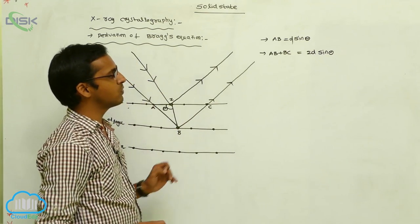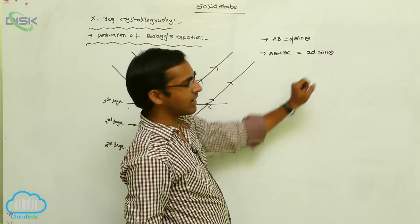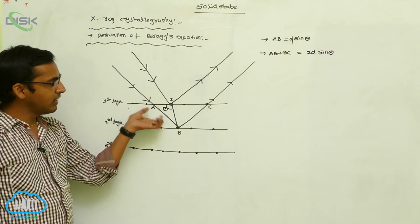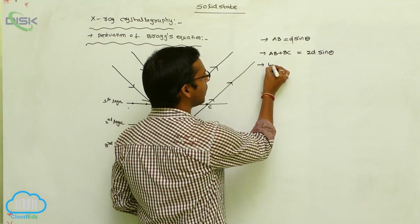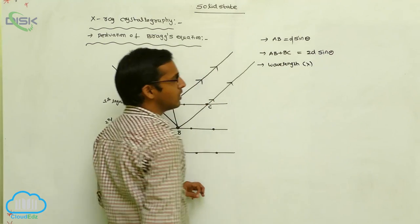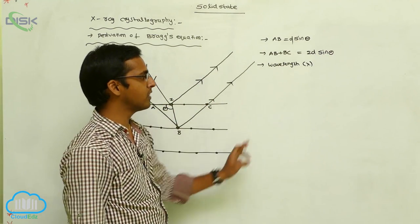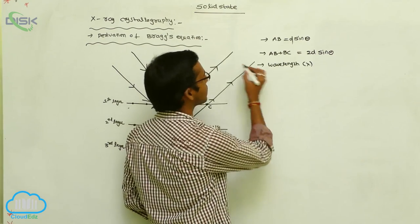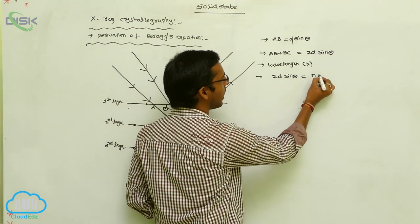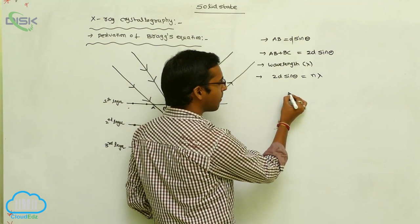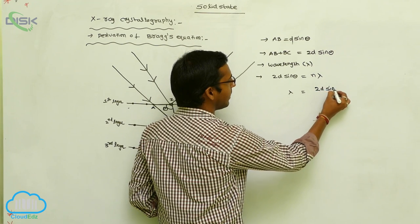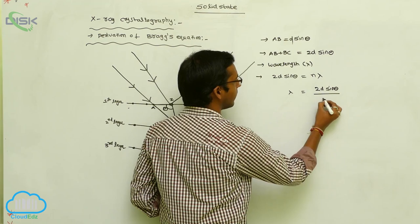By comparison of these two values, this 2D sine theta represents the distance between the first layer and the second layer. This is your integral number n, which equals lambda, that is your wavelength. So the integral number of wavelengths — the final Bragg's equation is 2D sine theta equals n lambda, or lambda equals 2D sine theta divided by n.